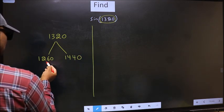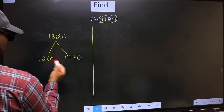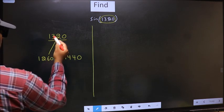This is 180 times 7 and this is 180 times 8. Between these two numbers 1320 lies.